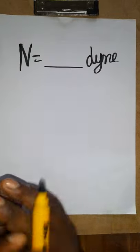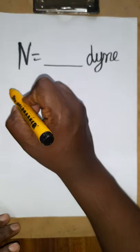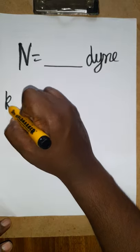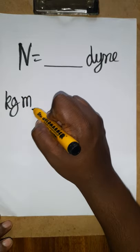Today we are going to learn how to convert from Newton to the dyne. Newton is a force unit. Force is equal to mass into acceleration, which we can call as kg meter second minus 2.